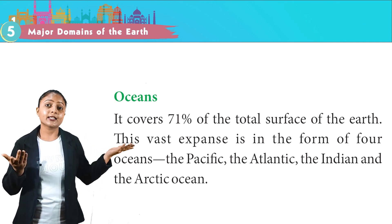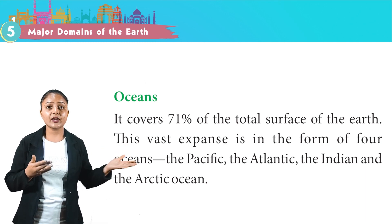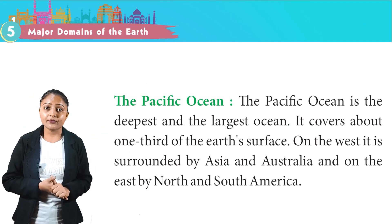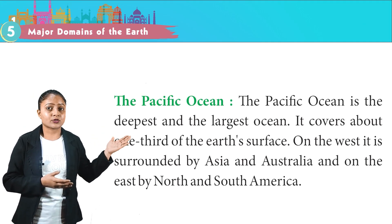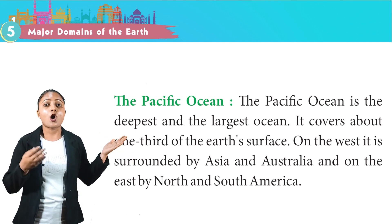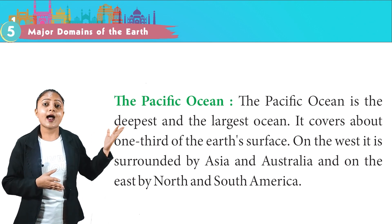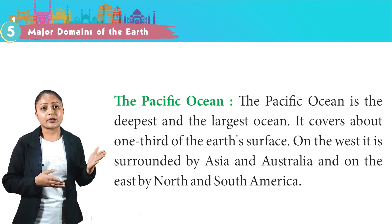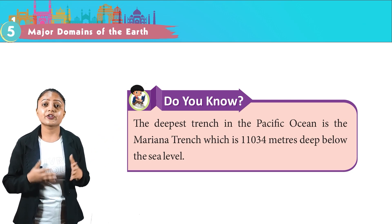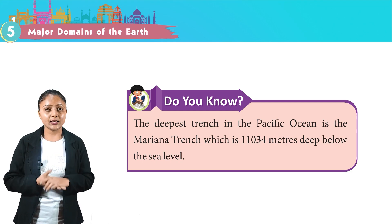Oceans cover 71% of the total surface of the earth in the form of four oceans: the Pacific, the Atlantic, the Indian and the Arctic. The Pacific Ocean is the deepest and the largest ocean, covering about one-third of the earth's surface. On the west it is surrounded by Asia and Australia, and on the east by North and South America. Do you know? The deepest trench in the Pacific Ocean is the Mariana Trench, which is about 11,034 meters deep below sea level.